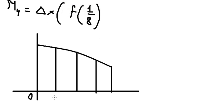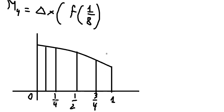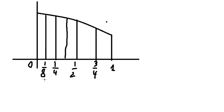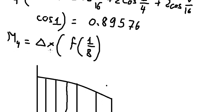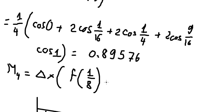Because we have n equals 4, the partition points are 1 over 4, 1 over 2, 3 over 4, and 1. For the midpoint, it should be in between 0 and 1 over 4, which is 1 over 8. We get this by taking 1 over 4 and dividing by 2 to get 1 over 8. For the next midpoint, we need to add 1 over 4, because from here to here is delta x divided by 2, and from there to the next point is also delta x divided by 2. So if we sum two values together we get delta x. That's why we need to add delta x, which is 1 over 4.